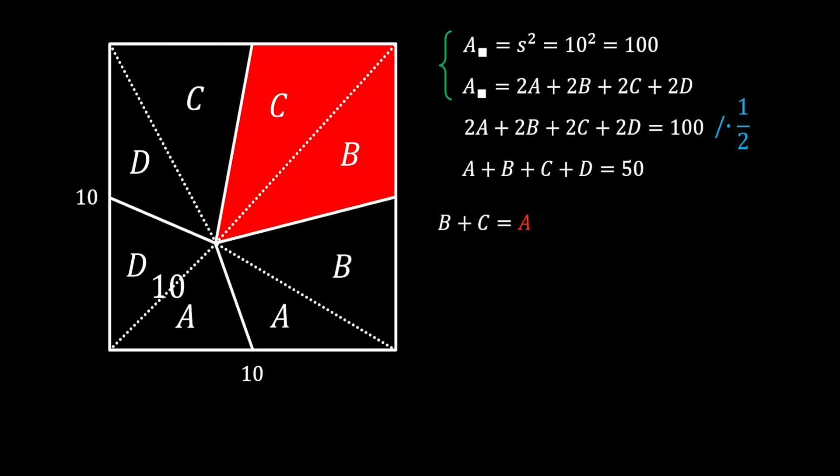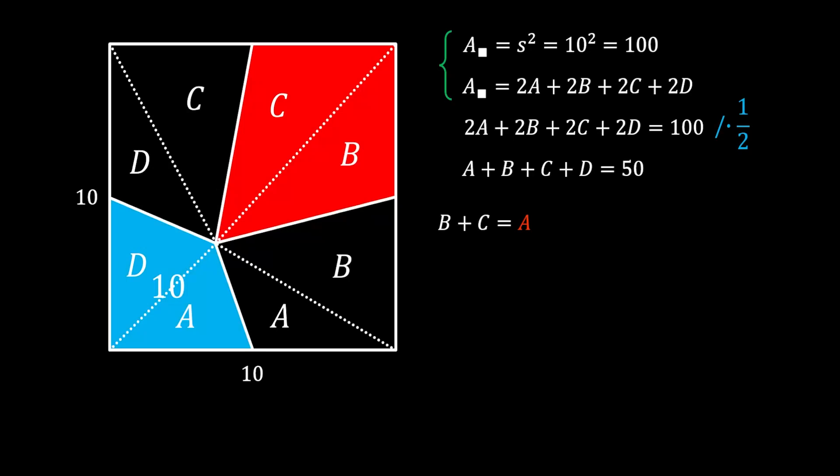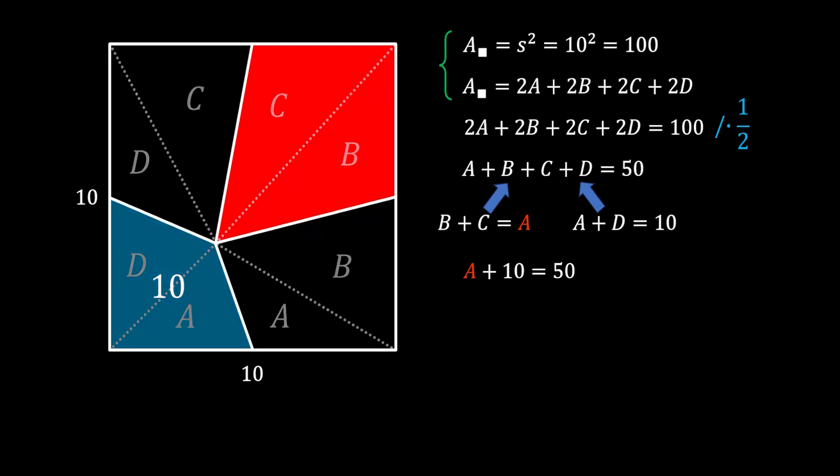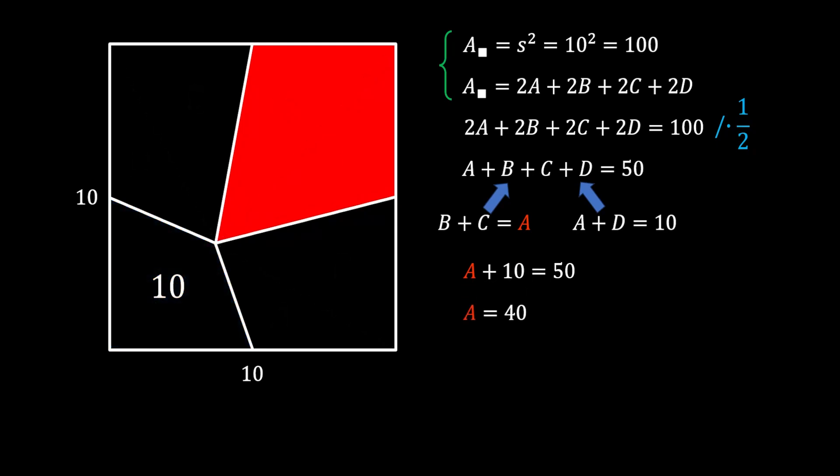But we know that the quadrilateral on the bottom left has the area of 10, and this quadrilateral consists out of areas A and D. Now, we can just substitute those values. And we will get that our wanted area plus 10 must be equal to 50, which means that our wanted red area must be equal to 40 square units, and this is our solution.